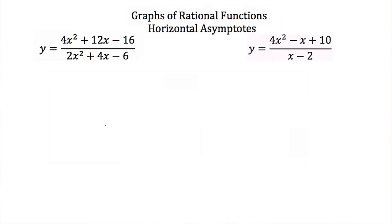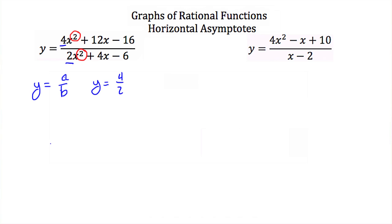Let's find the horizontal asymptotes. For y = (4x² + 12x - 16) / (2x² + 4x - 6), the numerator has degree 2 and the denominator has degree 2. Since they have the same degree, the horizontal asymptote is y = a/b. The leading coefficient a is 4 and b is 2, so the horizontal asymptote is y = 4/2, or y = 2.